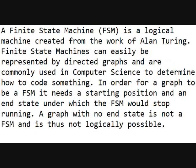A finite state machine, or FSM, or state machine, is a logical machine created from the work of Alex Doring. Finite state machines can easily be represented by directed graphs and are commonly used in computer science to determine how to code something. In order for a graph to be a finite state machine, it needs a starting position and an end state under which the finite state machine would stop running. A graph with no end states is not a finite state machine, and is thus not logically possible.